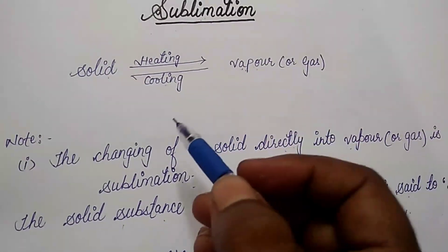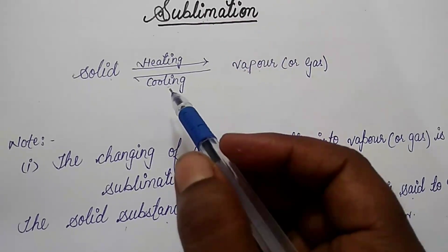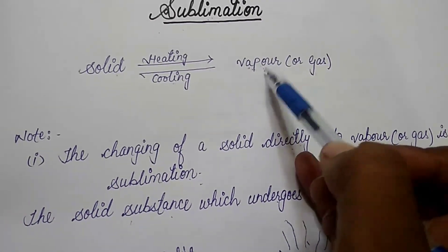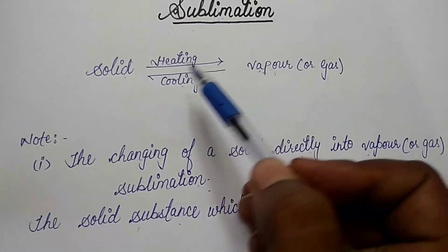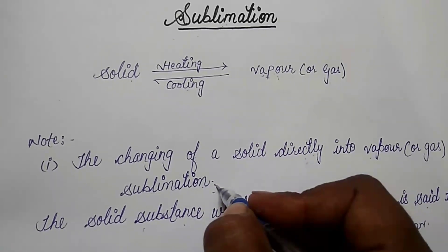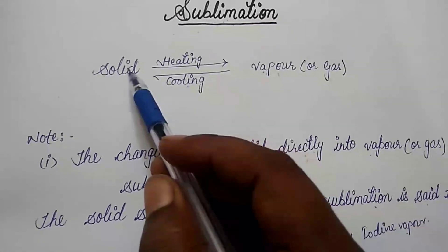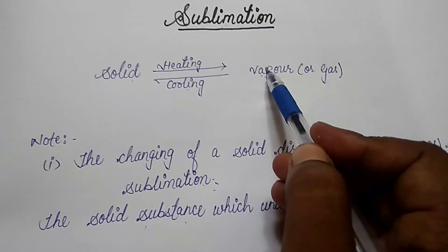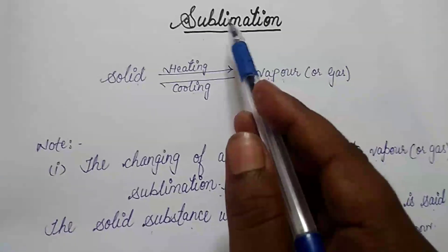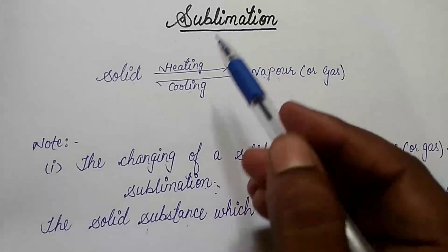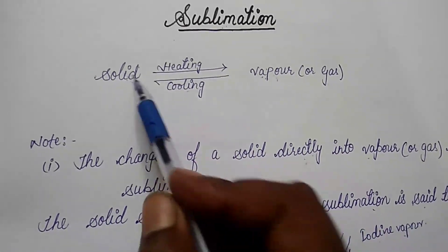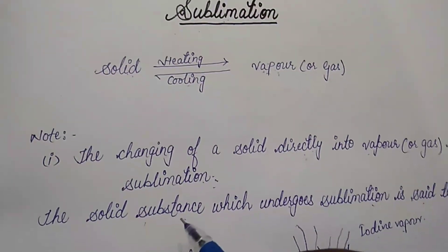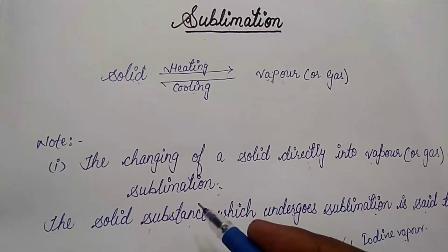But there are a few solid substances which directly change from solid to vapor without changing into liquid. That process is known as sublimation. Clearly, the process in which solid directly changes into vapor or gas form without changing into liquid is called sublimation, and those substances which undergo sublimation are known as sublime substances.